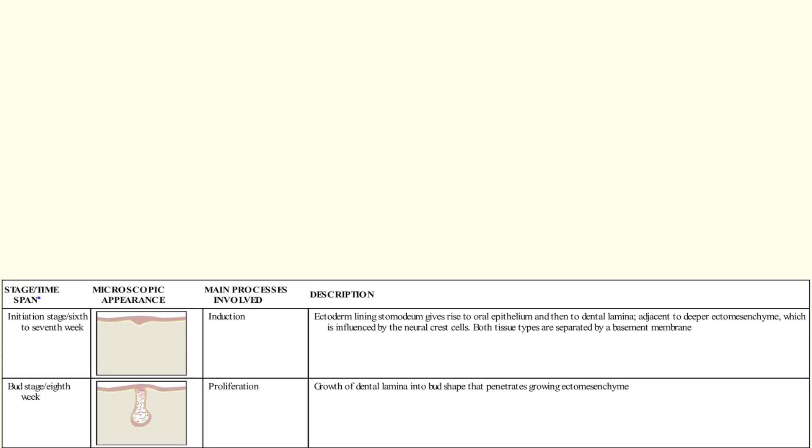The bud stage shows the creation of the ectomesenchyme and the development of the initial tooth bud. The primary mechanism involved is proliferation.